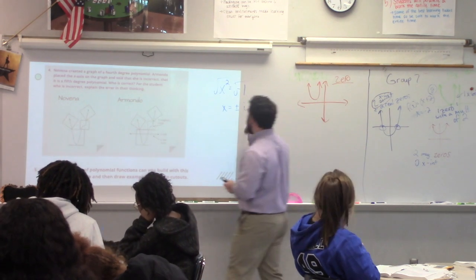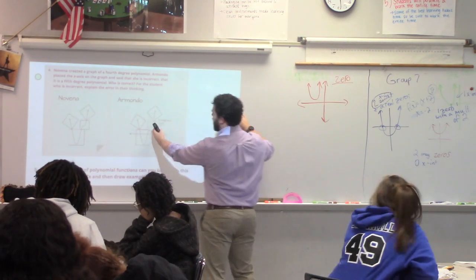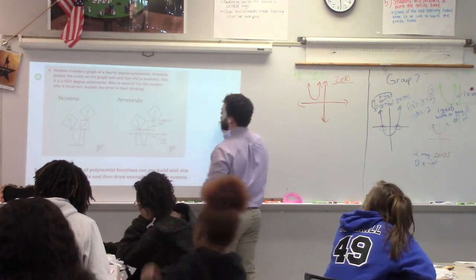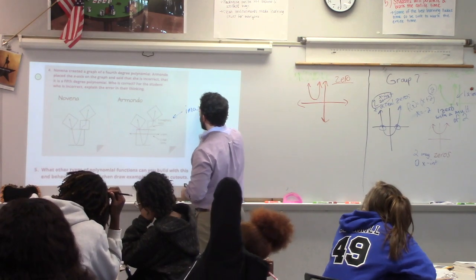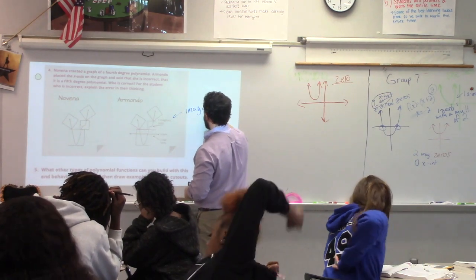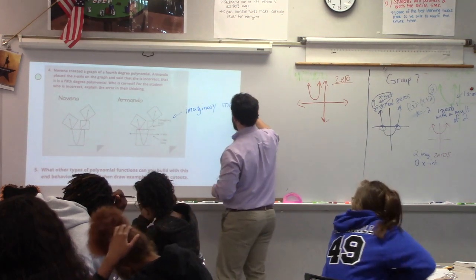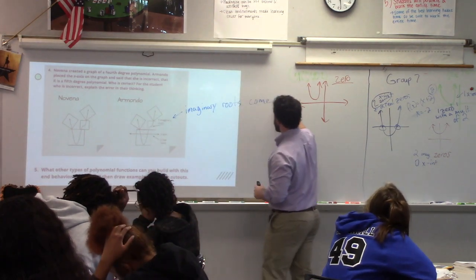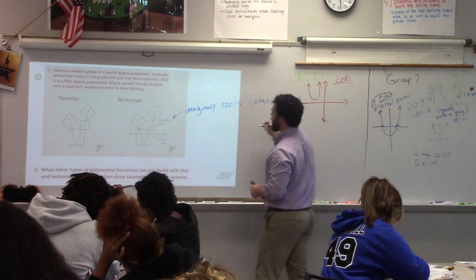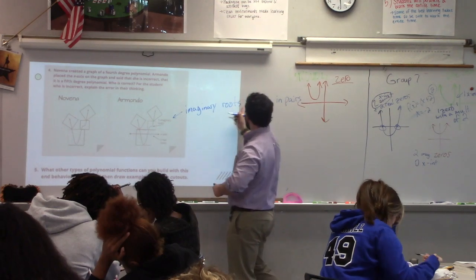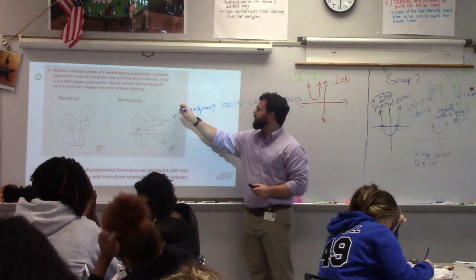So Armando's issue is he's looking at that curve and thinking it looks like a cubic, so it's three imaginary roots. But imaginary roots come in pairs - it can't be an odd number. That's the first issue.